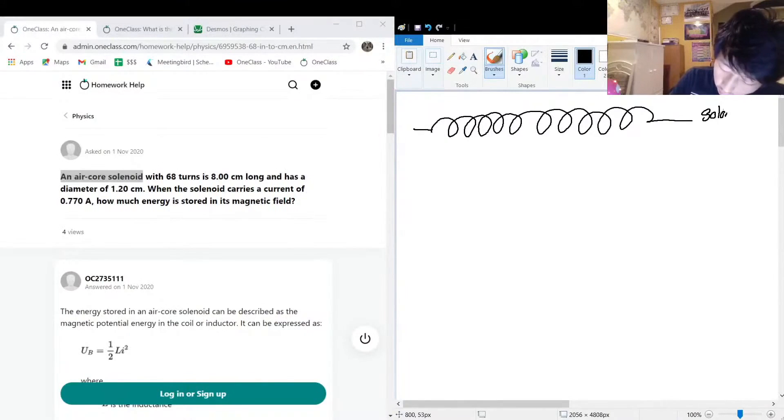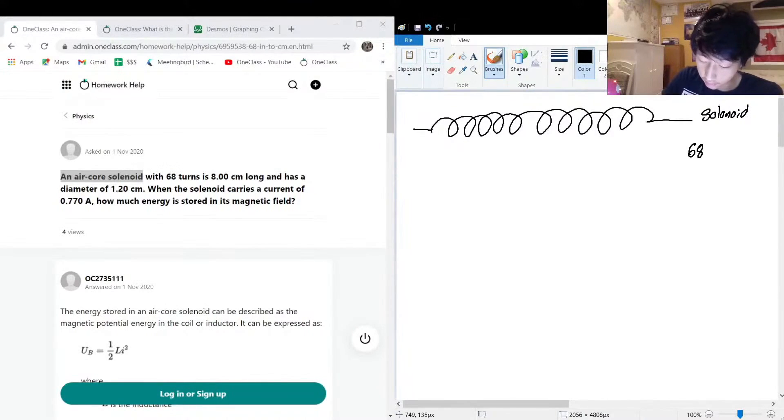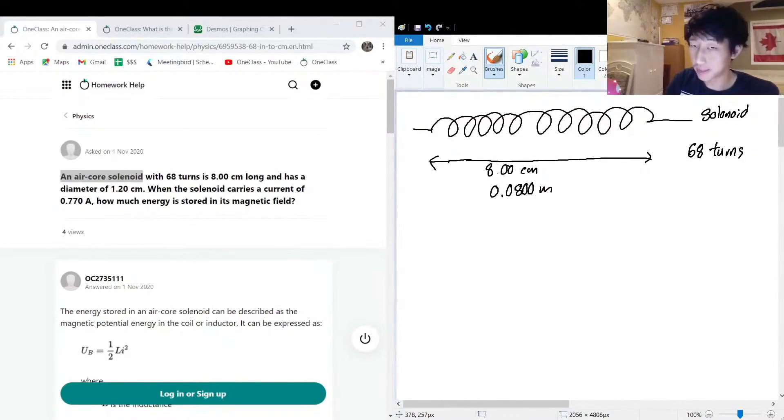And it says we have 68 turns, so 68 turns. One turn would be like one of these loops, but we got 68 of them, it's quite a few. It's 8 centimeters long and has a diameter of 1.2 centimeters. So its length like this is 8.00 centimeters, which is also equal to 0.0800 meters, just to keep it in base SI.